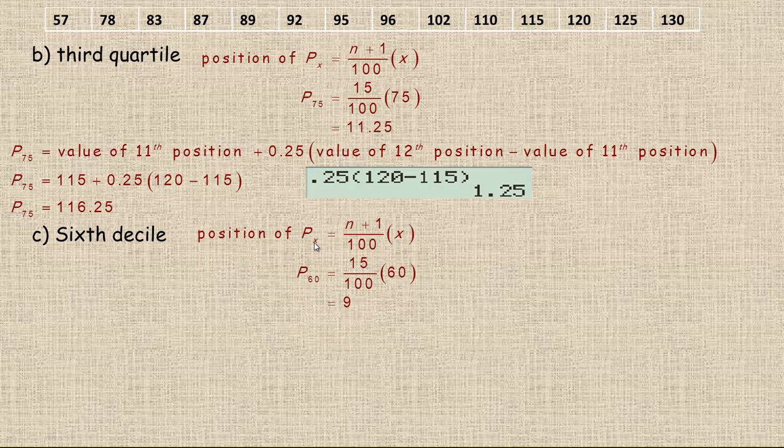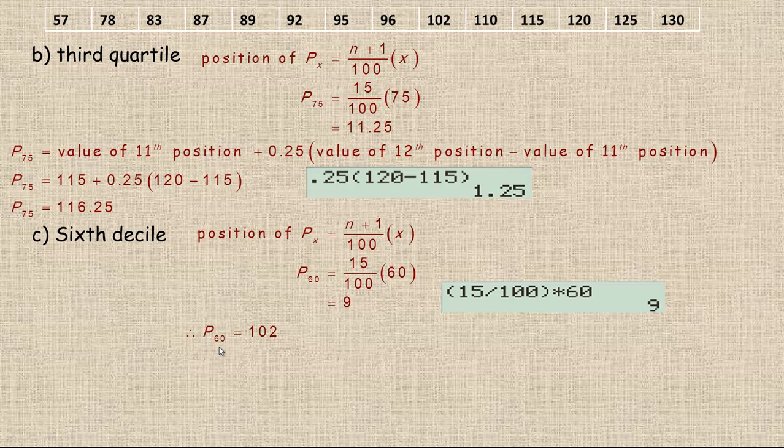The sixth decile means that x is 60 here. And so, we put 60 in place of x, and n is still 14. So, 14 plus 1 is 15. And so, 15 times 60 divided by 100 is 9. Now, it's nice when this works out to a whole number, because it just means that the sixth decile is the ninth number, which is 102. So, the sixth decile, or the 60th percentile, is the number 102. It's the ninth number from the bottom in the data set.